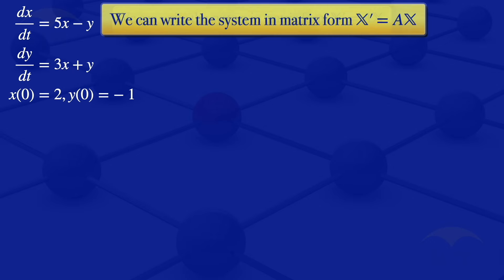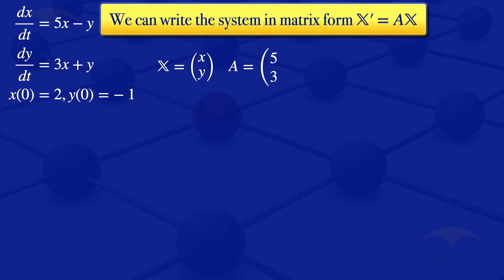We can write that system in matrix form as x' = A times x, where x is the column matrix of dependent variables x and y, and matrix A contains the coefficients of the dependent variables. So our matrix A is [5, -1; 3, 1].